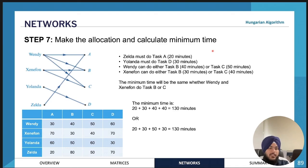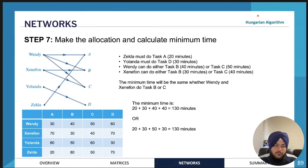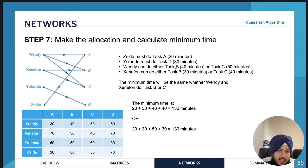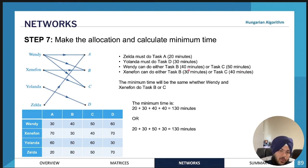Yolanda can do task D in the minimum amount of time, so she is allocated to task D — 30 minutes. Wendy and Xenophon can each do task B or task C, so it doesn't really matter which way you allocate them since either way you get the same total. Adding all times together from the original table, the minimum total time to complete the project is 130 minutes. That's how you use the Hungarian algorithm to find the optimal allocation.